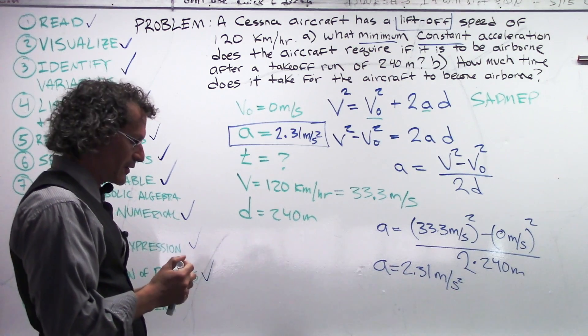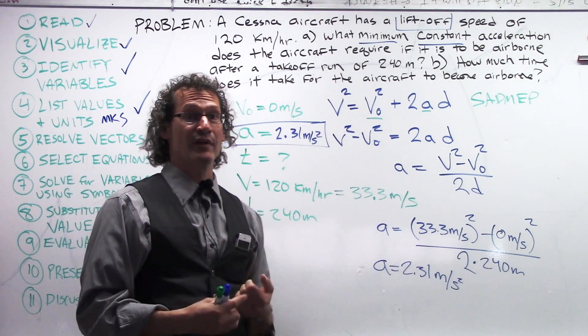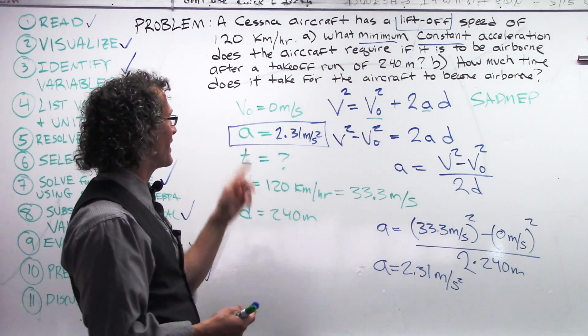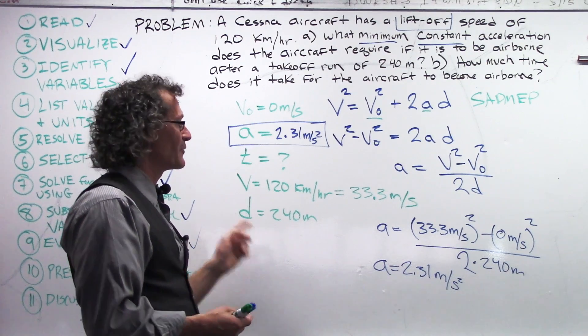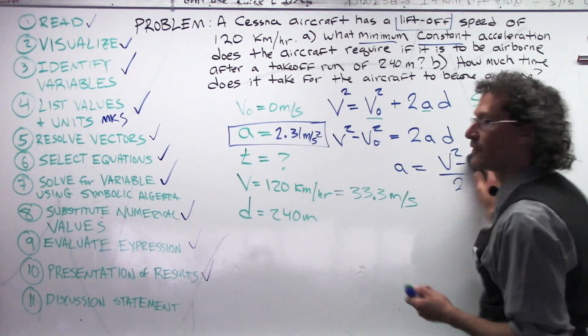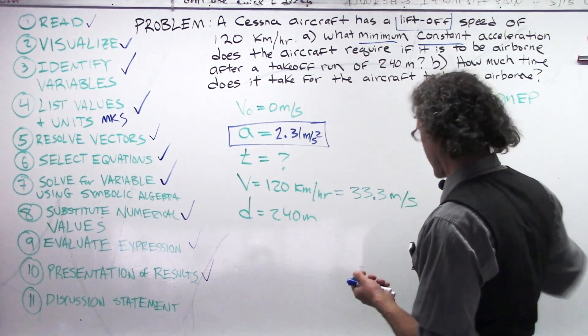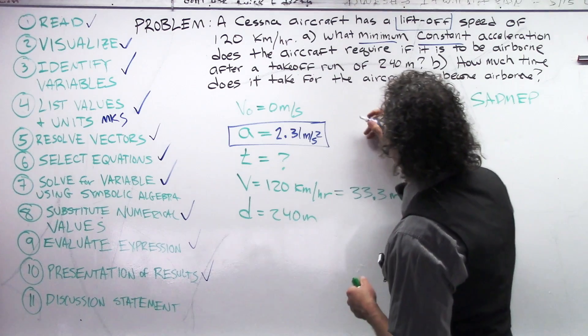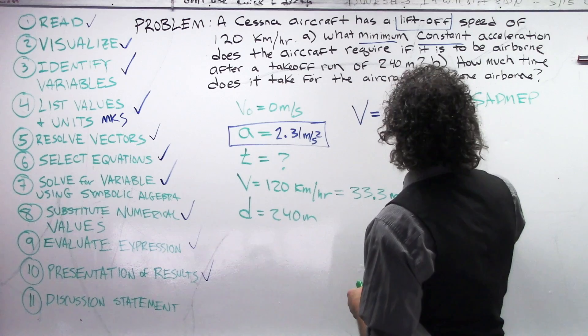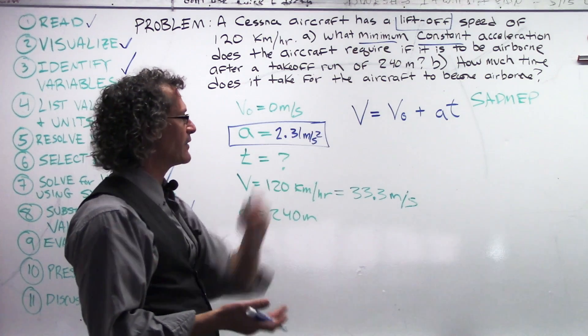We still have to figure out time. And, the beauty is that we have so many values, we can use any of the three equations because we have all of them. We got V naught. We're looking for T. We have V naught. We have A. We have V. And, we have D. So, I'm going to choose what I think is the simplest one. And, that is the first equation. The first equation has everything that we need. Allow me to write that down for you. That would be V equals V naught plus AT. No squares. No funky stuff like that. So, I like this one. But, we want to solve it for T.